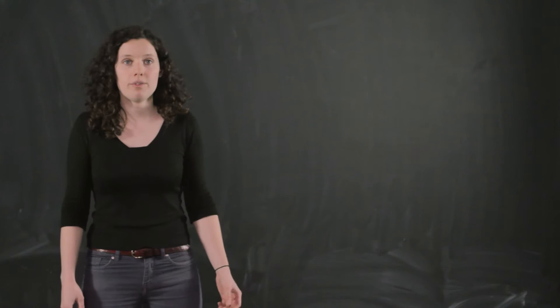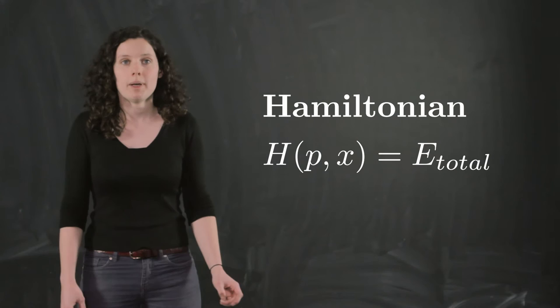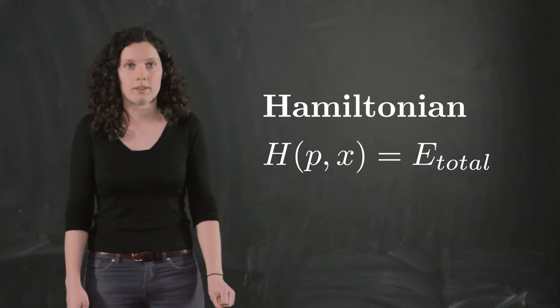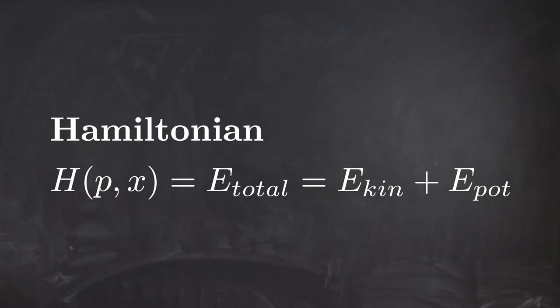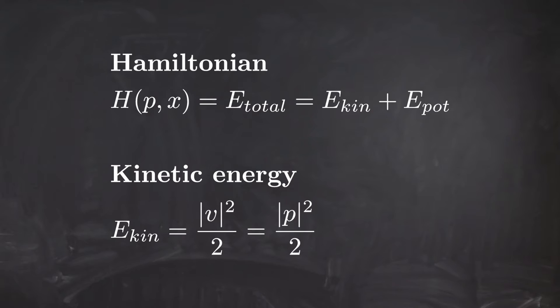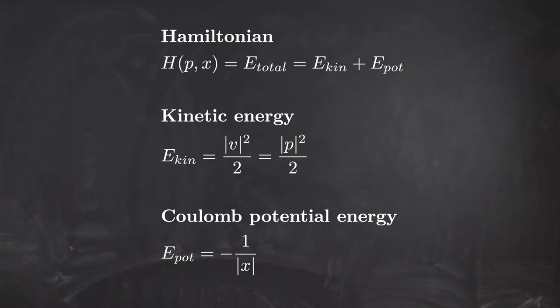The system is still described by its momentum p and position x, but the equations rely on the definition of a new quantity called the Hamiltonian, which depends on both the position and the momentum of the particle. The Hamiltonian is in fact equal to the total energy of the system. The energy is divided into two parts: the kinetic energy and the potential energy. The kinetic energy is half the velocity squared, and since the velocity equals the momentum, the kinetic energy is p²/2.